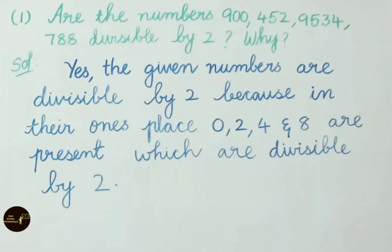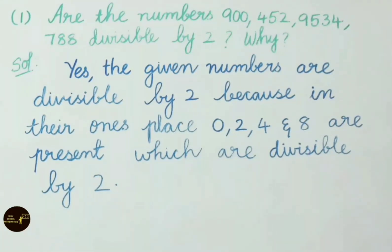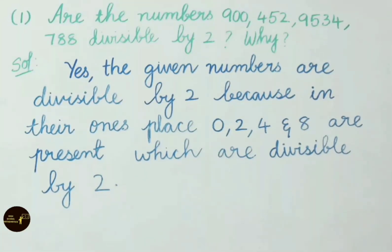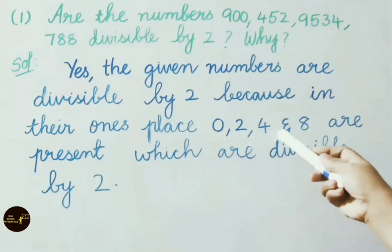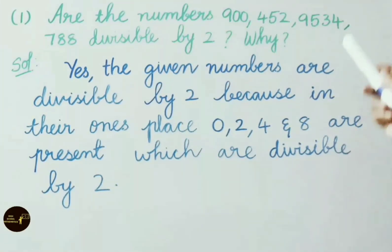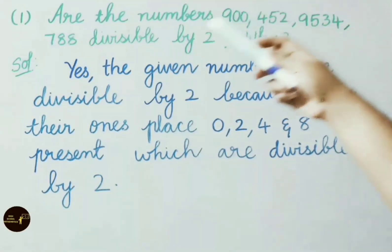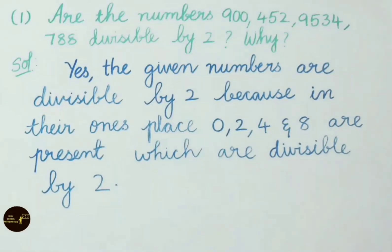As we know, divisibility by 2: a number is divisible by 2 if it has any of the digits 0, 2, 4, 6 or 8 in its ones place. As we are having 0, 2, 4 and 8 in the ones place, all these four numbers are divisible by 2.